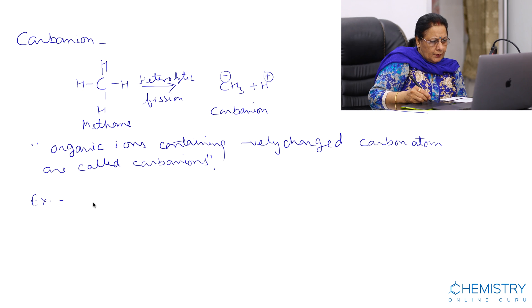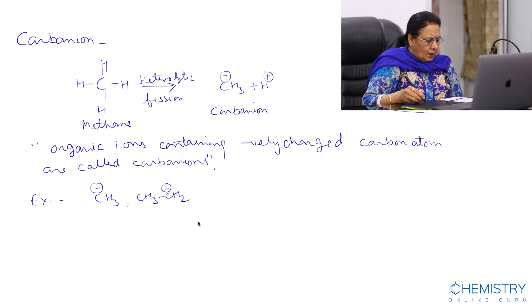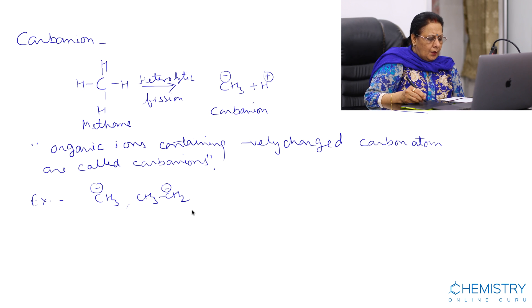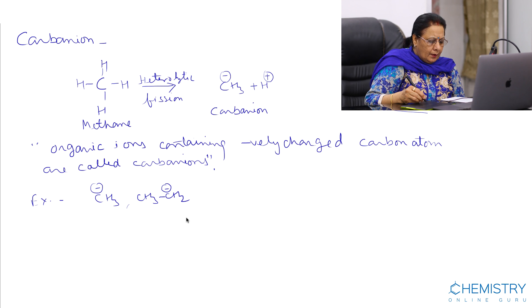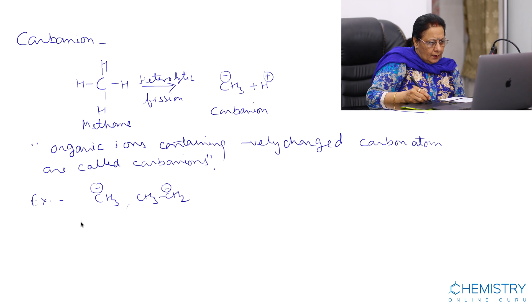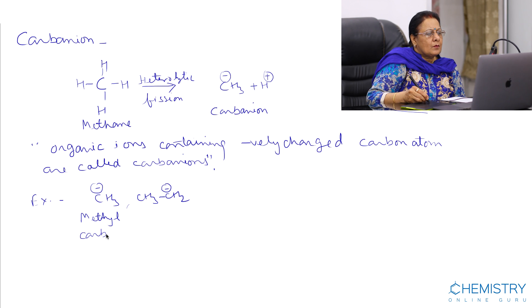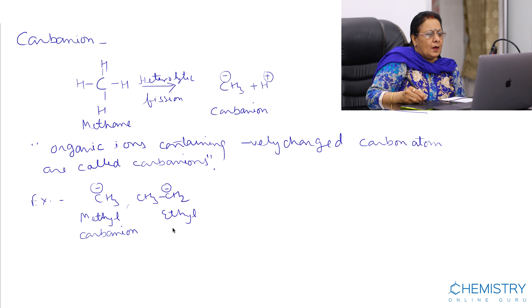Carbanions are named after the name of the parent alkyl group by adding the word carbanion. The name of this carbanion is methyl carbanion. This is ethyl carbanion.